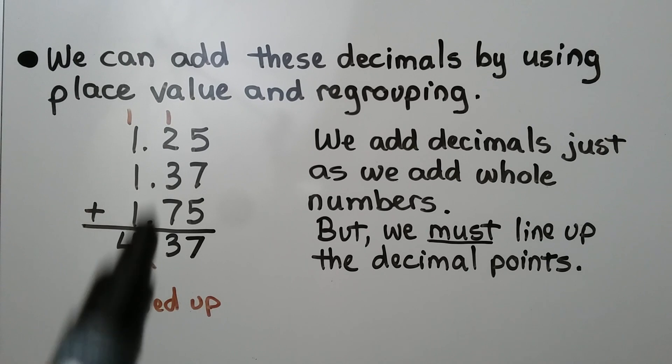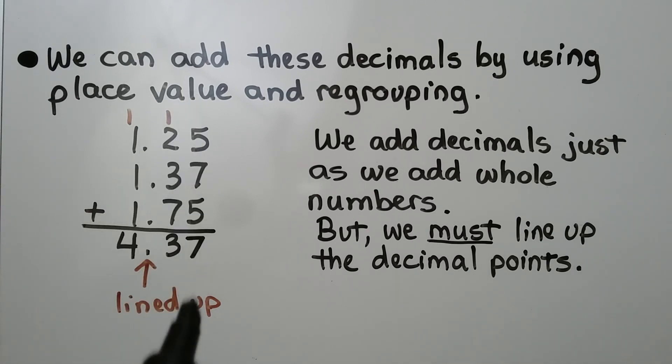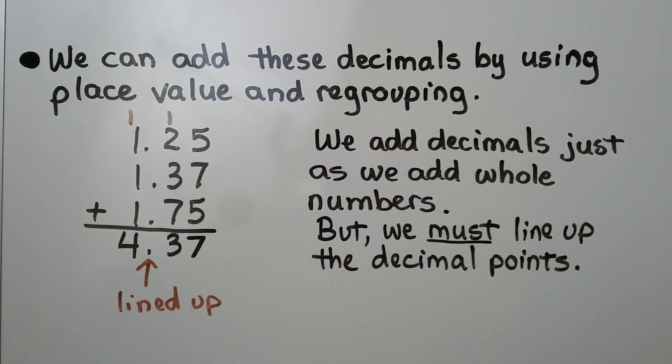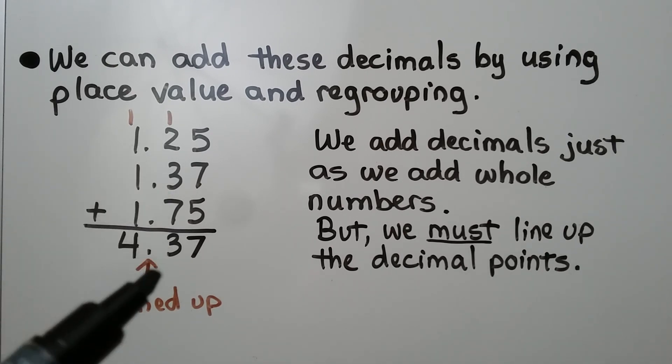They need to be all lined up so that our columns are straight. We get 4.37. So by doing this and using place value and regrouping, we would do it the same way we would do it if there were no decimal point here.